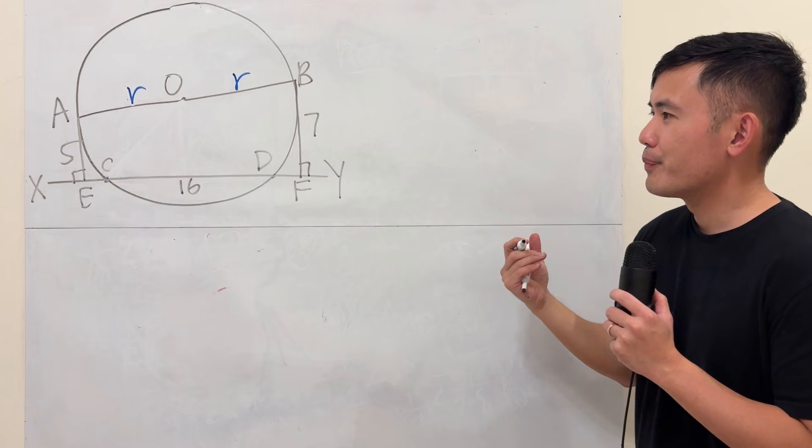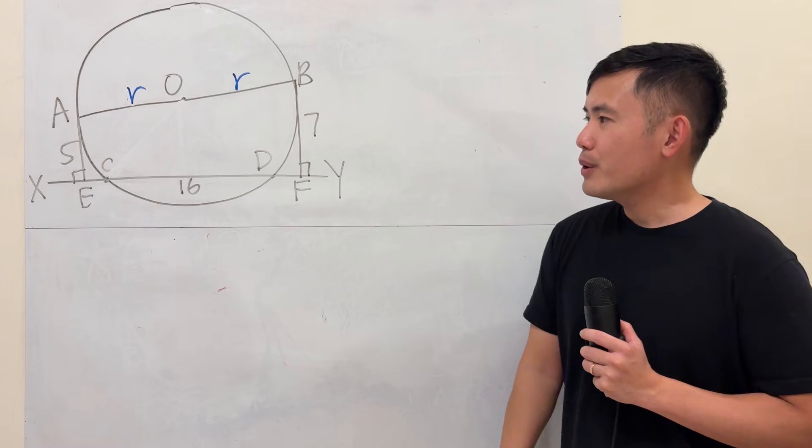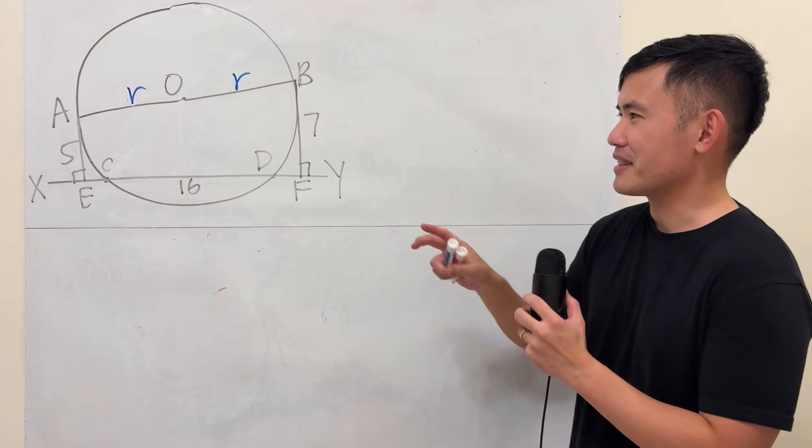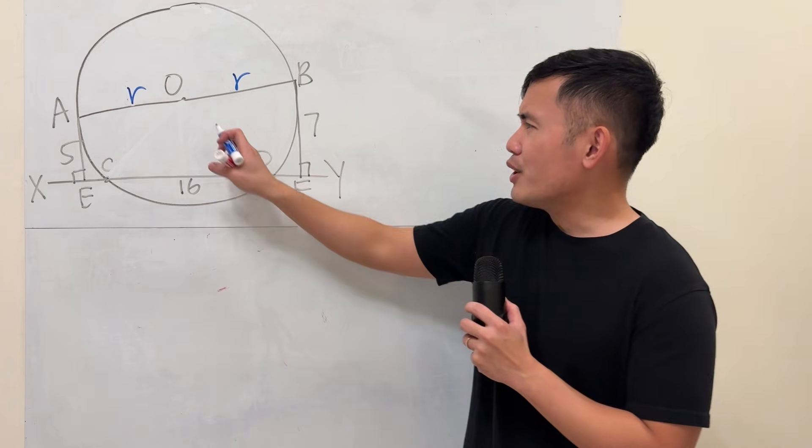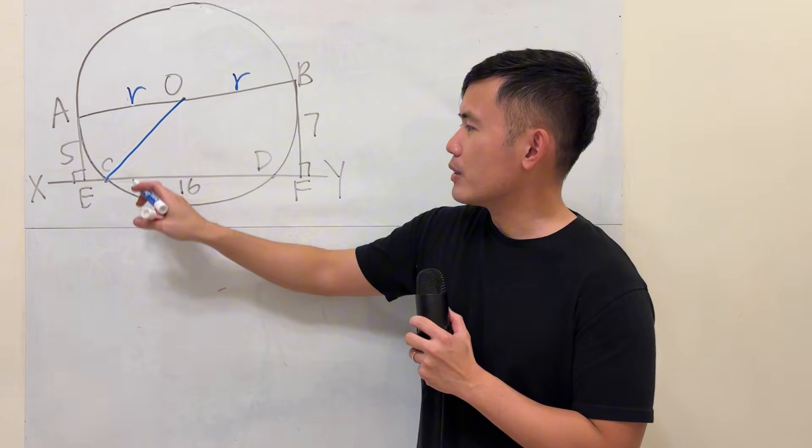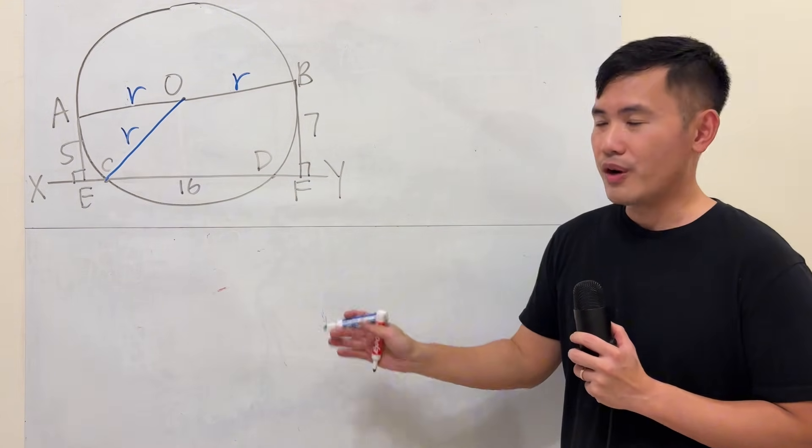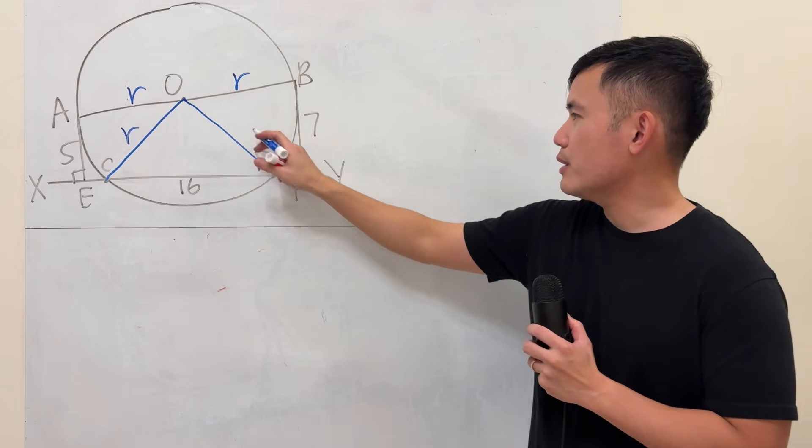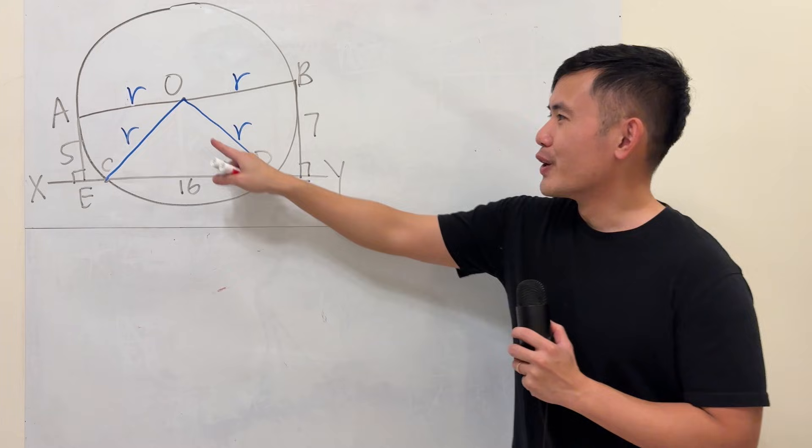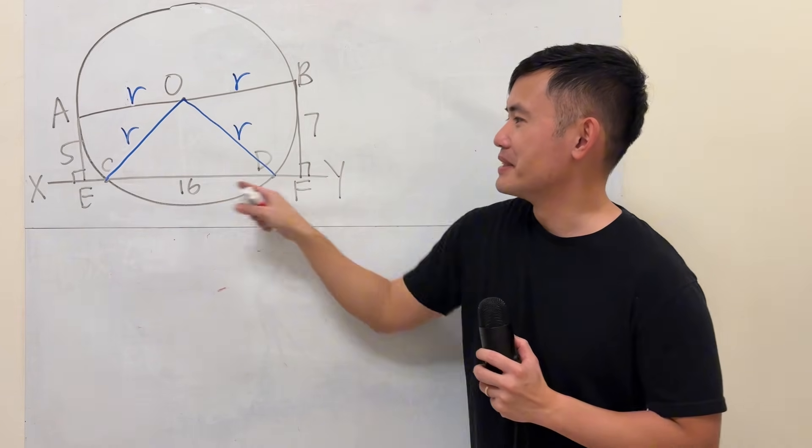But what do we do next though? We must involve these numbers to help us out, so we have to make more connections, connect the dots, connect the points. So if you go from the center O to the circle at point C, that's radius r. And if you do the same to D, that's also the radius. But unfortunately we cannot tell how big this angle is even though we have r, r, 16.